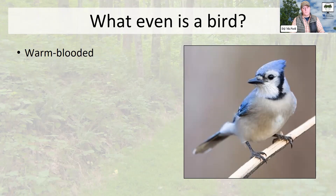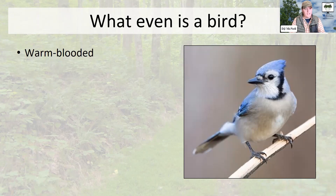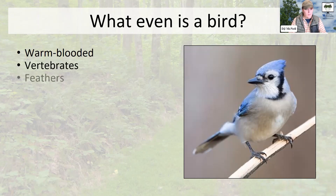I think most folks have a very intuitive sense for what a bird is. You've probably seen a bird today, perhaps even eaten a bird today. They're ubiquitous in a lot of ways, but it's helpful to have some basic definitions. So all extant birds — birds that we have on Earth today — are warm-blooded. They're all vertebrates, of course, meaning that they have a spine.